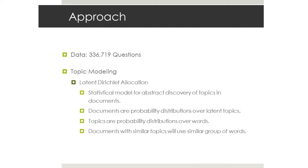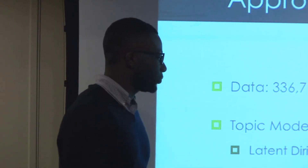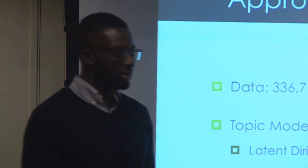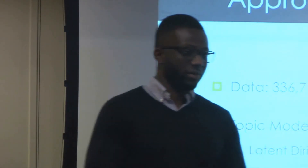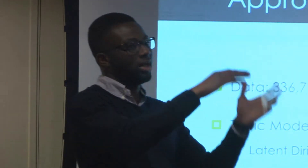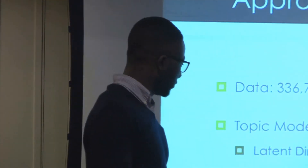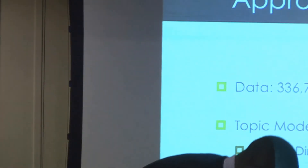LDA assumes that documents are probability distributions over latent topics, and topics are probability distributions over words. So documents with similar topics will use similar groups of words. For instance, a science magazine versus a football magazine will have specific words appearing in one that wouldn't appear in the other.